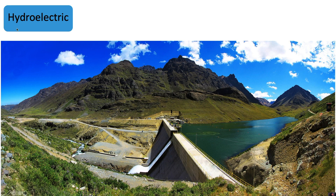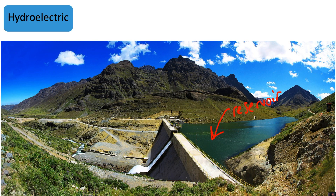Now let's look at hydroelectric energy. Breaking down the word, 'hydro' relates to water and 'electric' to electricity — so this is generating electricity using water. In the image, you can see a large reservoir of water stored high up. The water is allowed to flow down to turn a turbine at the bottom. The water either flows into a river or is stored in a lower reservoir and in some cases pumped back up. It is the movement of this falling water that turns the turbine to produce electricity.